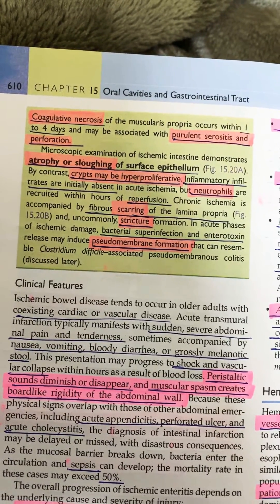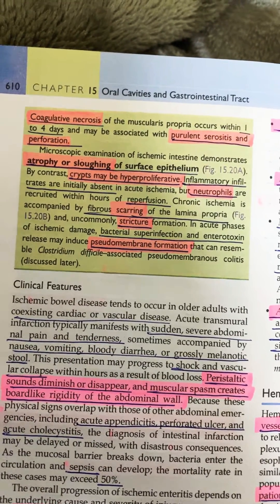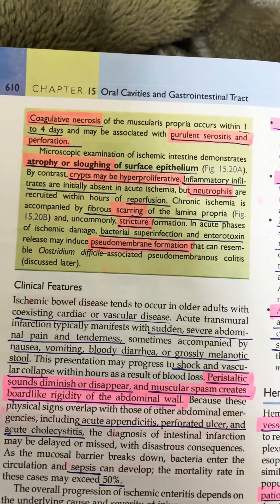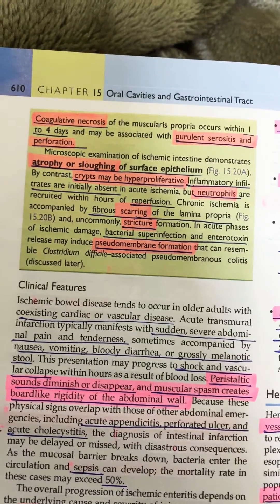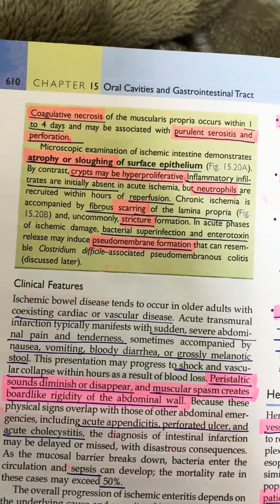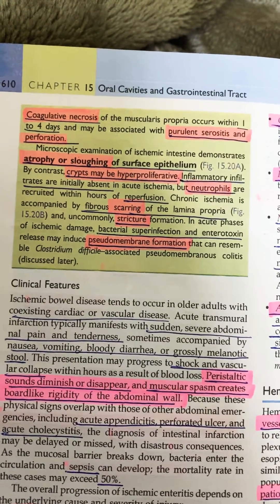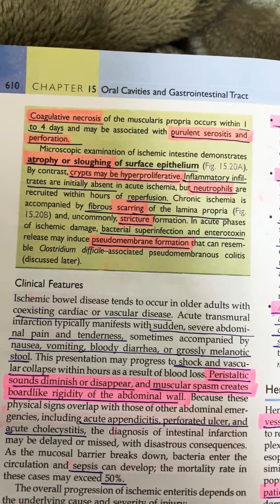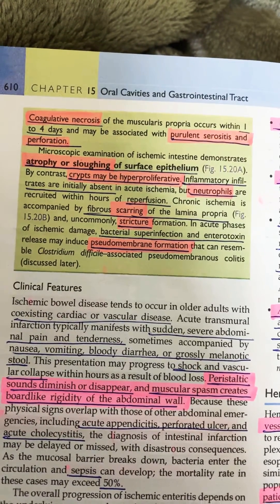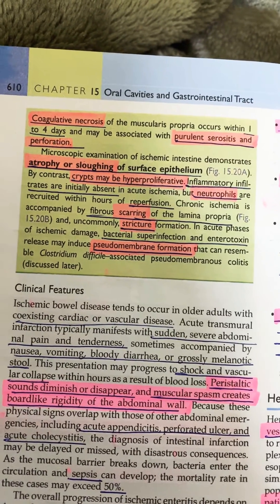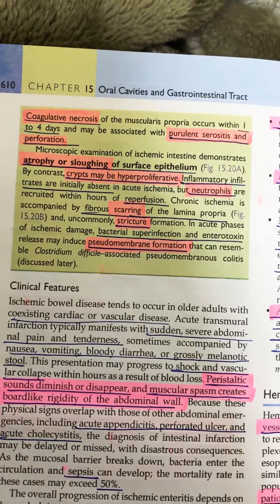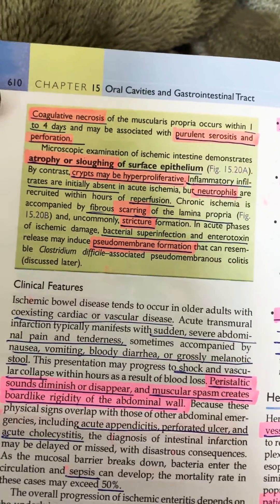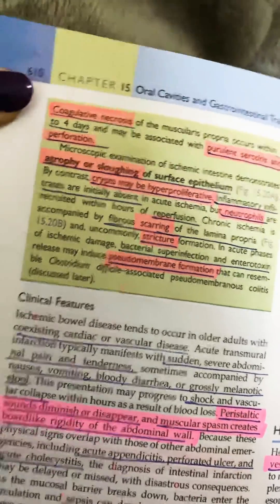Neutrophils will not appear initially but will come during the stage of reperfusion. If the ischemia becomes chronic, it will lead to fibrous scarring and stricture formation. There may also be pseudomembrane formation due to bacterial superinfection.